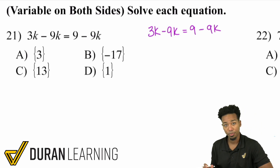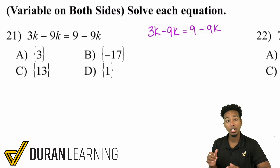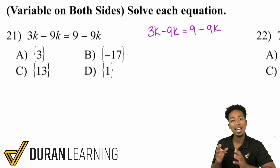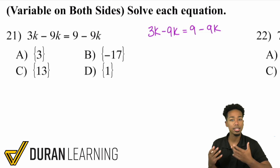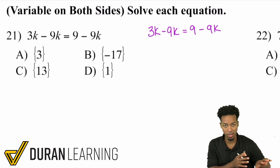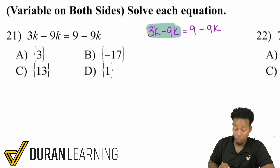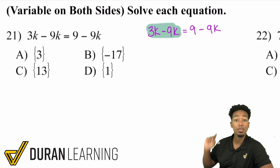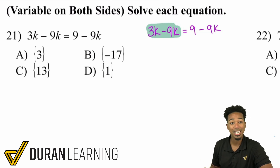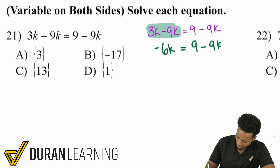So here's what we're going to do. Just like in the previous video where we got done learning how to simplify first, we're going to simplify where we can, and then we're going to utilize the idea that we need to do the same thing to both sides to move the variables to one side. So step one, I notice that we have like terms that we can combine right here: 3k minus 9k. If we go ahead and do that, what we'll receive is negative 6k. So after doing that, we've got negative 6k equals 9 minus 9k.